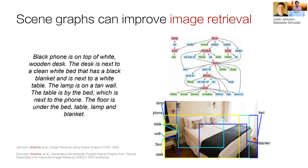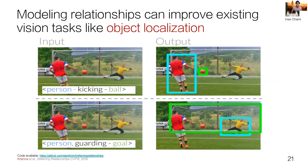That representation can be used to develop image retrieval systems that decompose queries into a scene graph, which can then be used to ground and retrieve appropriate images. Recently, we also showed that understanding relationships between objects can improve object localization. Even though detecting small objects like the ball in an image is very difficult for vision detectors, knowing that there is a person kicking the ball provides contextual clues that focus our model's ability to reason about where the ball must be.